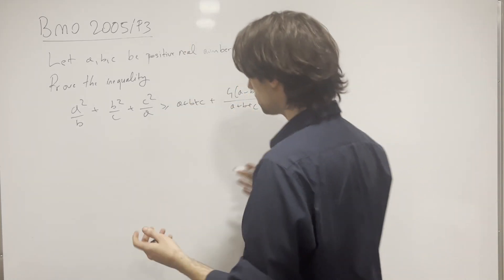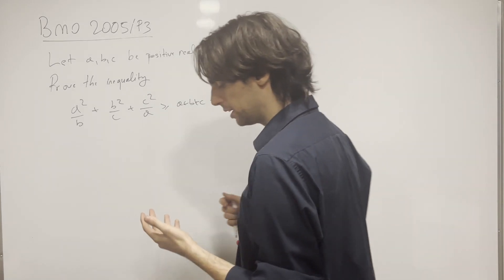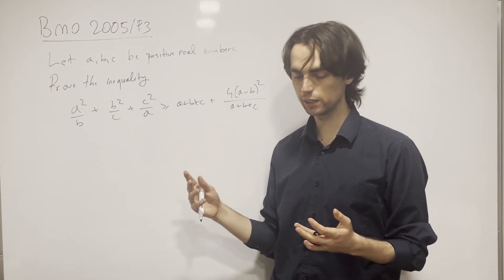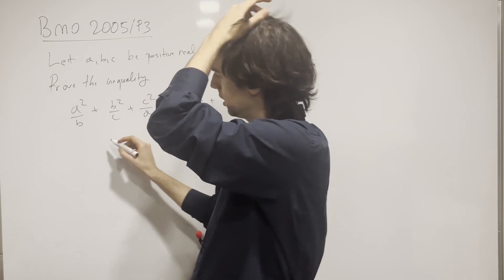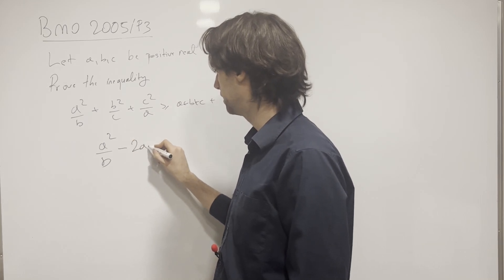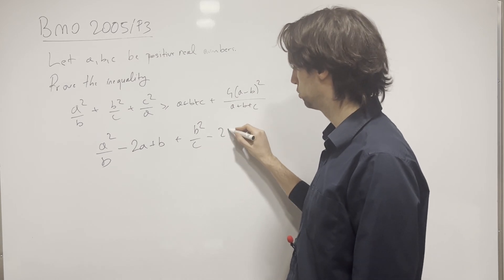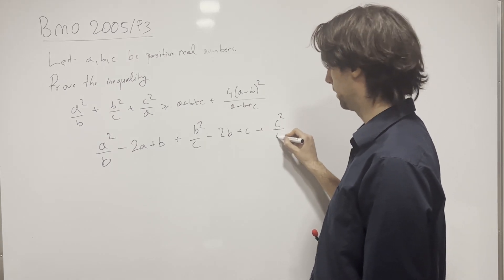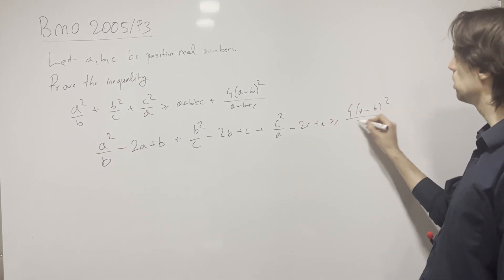The answer is: wait a second, I have this AM-GM proof. Instead of just using the AM-GM inequality, let me rewrite it. Let me write it as full squares. What happens is I'll get a²/b − 2a + b, plus b²/c − 2b + c, plus c²/a − 2c + a — and this needs to be greater than or equal to 4(a−b)²/(a+b+c).